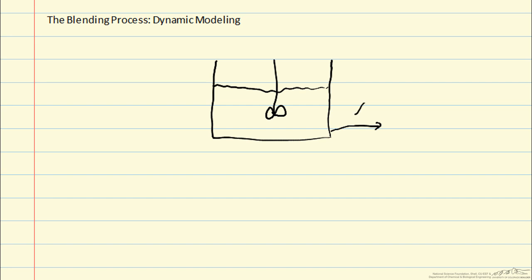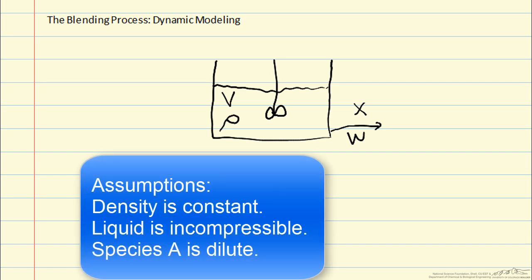We're going to consider mass fraction X of species A and total mass flow rate W leaving the tank. The tank is going to have a volume V and that volume can change but it will also have a density rho that we will assume is constant. We will assume that we have liquid in the tank which is incompressible and that the species A of interest is dilute such that its amount doesn't really change the overall density.